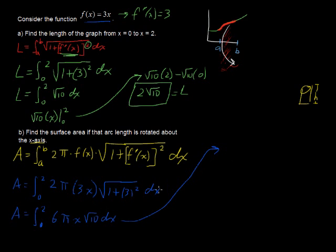The antiderivative of that is going to be 3x squared, or 3π square root of 10 times x squared evaluated from 0 to 2. That is 3π square root of 10 times 2 squared minus 0. That's 3π square root of 10 times 0 squared. And in the end,